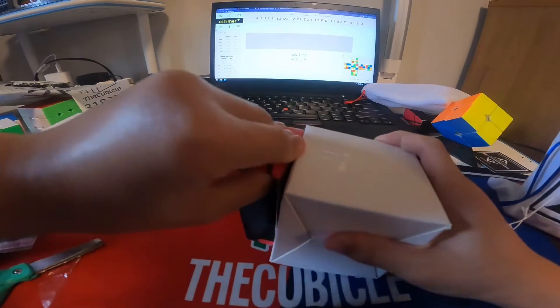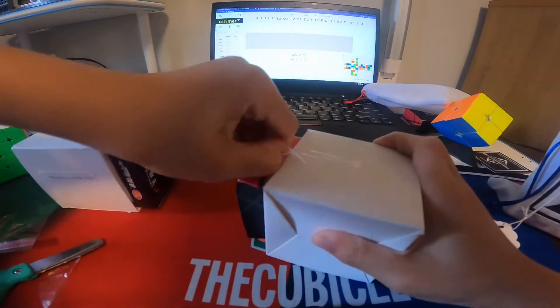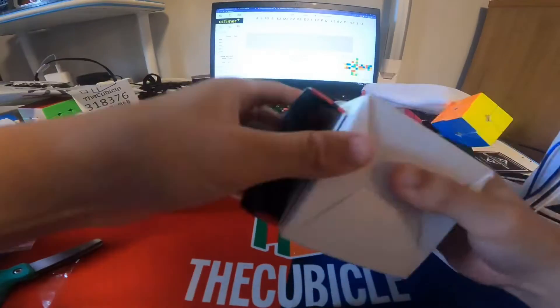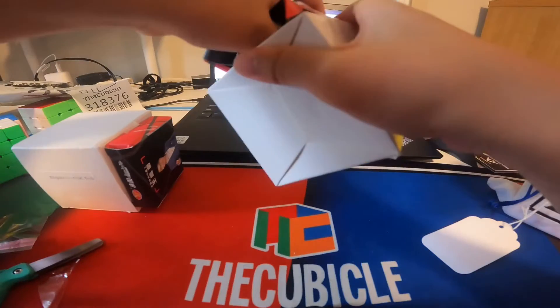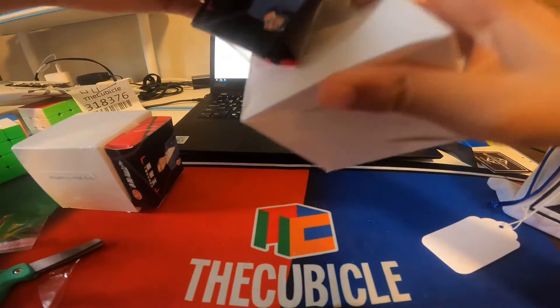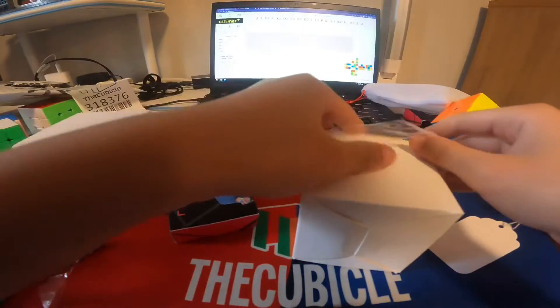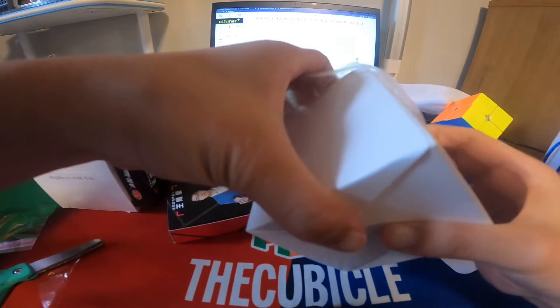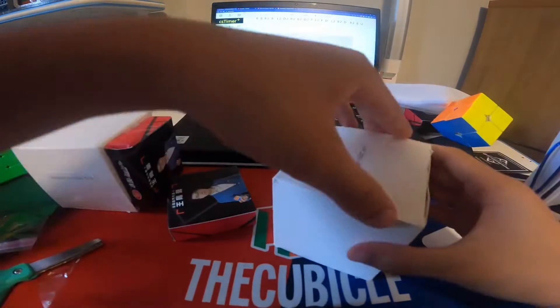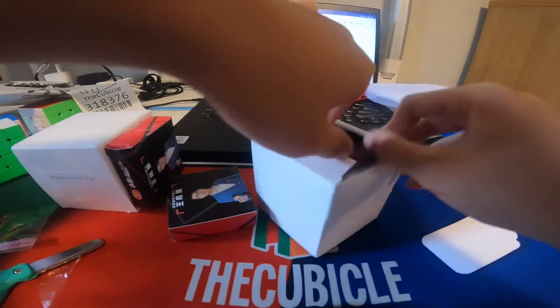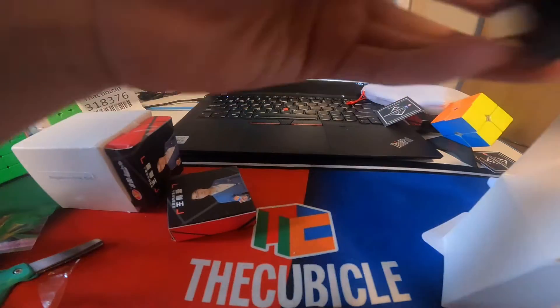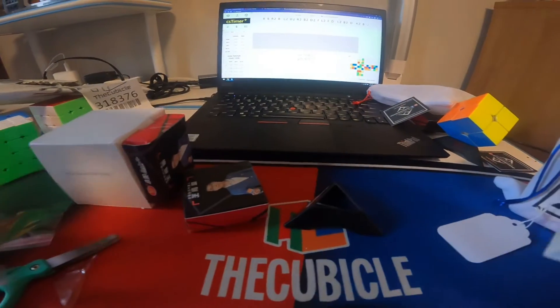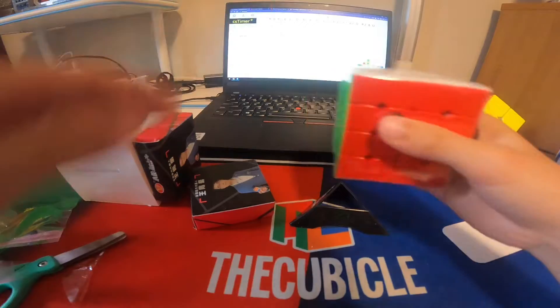Here is the... Okay, how did I get this off? Here's the accessories box. And here's an Angstrom card. TheCubicle.com. Here's another cube stand. And here's the MGC 4.